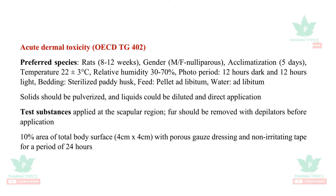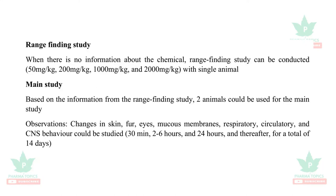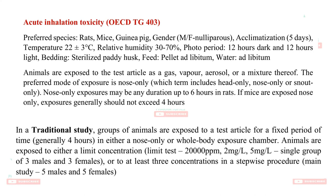For acute dermal toxicity study, the same test conditions apply. The total area selected is 10% of total body surface area — 4 cm × 4 cm — and it is covered with porous gauze dressing and non-irritating tape, observed for 24 hours. It includes two studies: a range finding study where different dose levels are administered, then a main study. It is observed for skin, eyes, mucous membranes, and respiratory changes at 30 minutes, 2 to 6 hours, and 24 hours, for a total period thereafter.